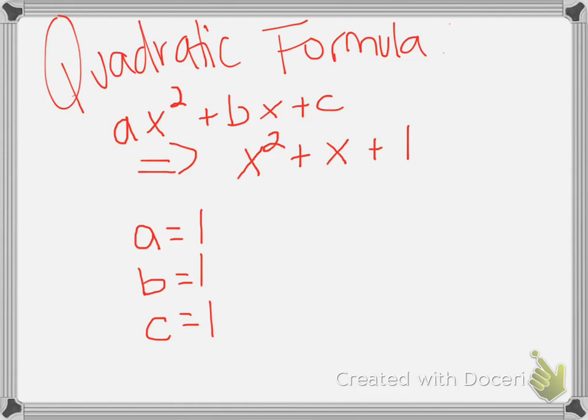So, if you look to where the quadratic formula is, you can see that we have a is one, b is one, c is one. If that doesn't make any sense, then this might help more.